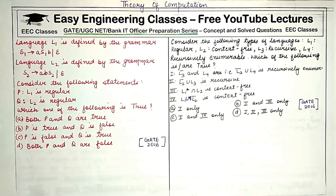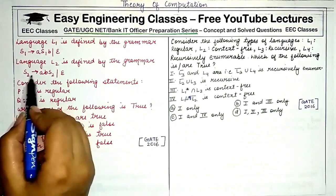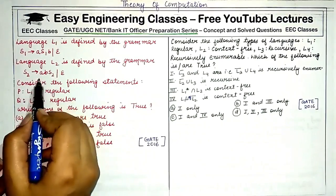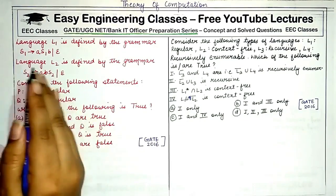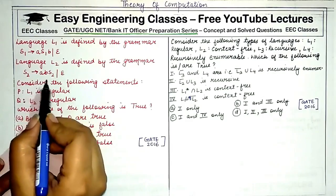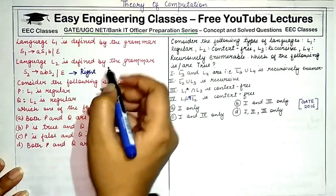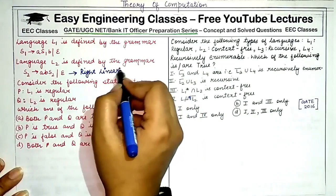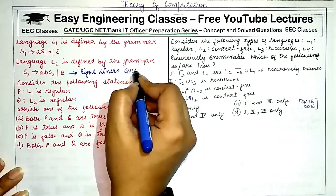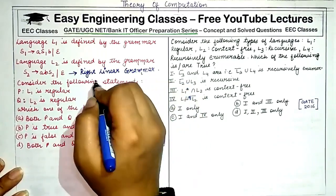That non-terminal is the rightmost symbol in the production. For example, S2 goes to ABS2 — there is a single non-terminal on the right hand side and it appears at the rightmost end, making it a right linear grammar. Similarly, a left linear grammar contains a single non-terminal that appears at the leftmost side of the production.